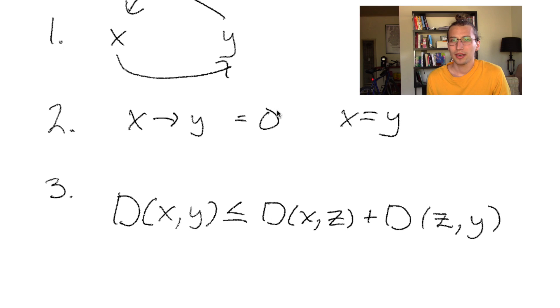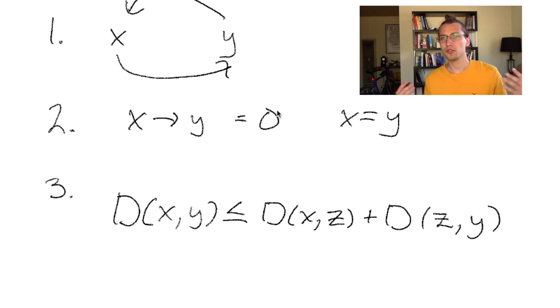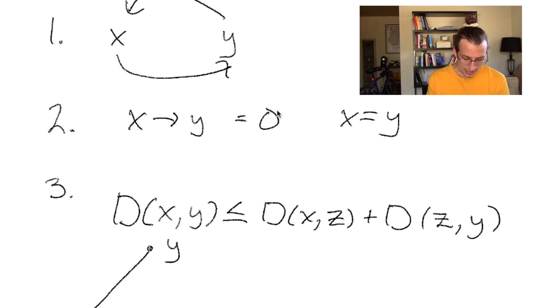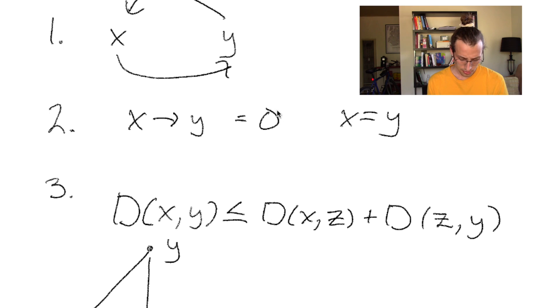Originally I actually talked a little more about what defines a metric and what requirements go into being a metric. And then I also went over an example where we use the p-adic metric to show that the sum of powers of two approaches negative one. But this video is already getting kind of long, so I'm going to make it a bonus footage video and hopefully release it sometime soon after this video is released. So be sure to check that out - I'll put an end card somewhere on the screen.